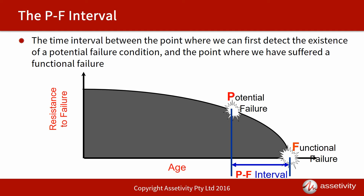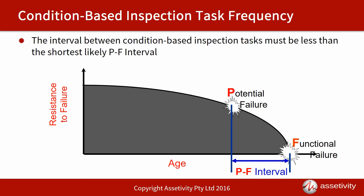Our condition-based inspection must be done at a frequency that is less than the shortest likely PF Interval for that particular technique. If we set the inspection interval at greater than the PF Interval — say, twice the PF Interval — we might come along, find the temperature is okay, leave the equipment in service, come back later and find it's hotter but still below the alarm level, then come back again only to find we've already passed the point of functional failure, missing the opportunity to predict that upcoming failure.